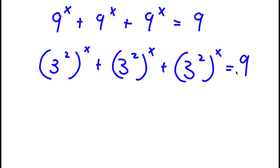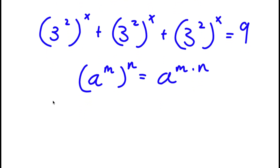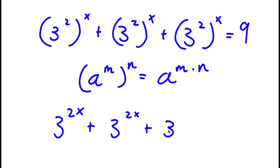If I have something in the form a to the power of m to the power of n, this equals a to the power of m times n. So 3 to the power of 2 to the power of x equals 3 to the power of 2x. I now have 3 to the power of 2x plus 3 to the power of 2x plus 3 to the power of 2x is equal to 9.